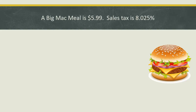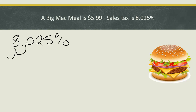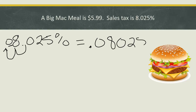Our first step is to change that percent into a decimal. To change it into a decimal, I'm going to move my decimal left two places — one, two. Notice I have a missing space; I can't do that in the middle. So, 8.025% is going to equal 0.08025.